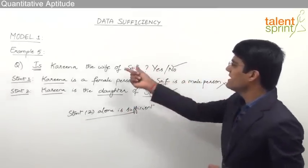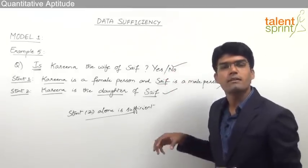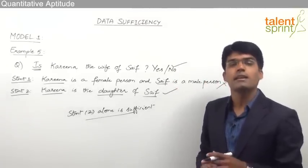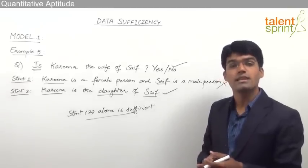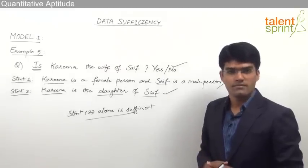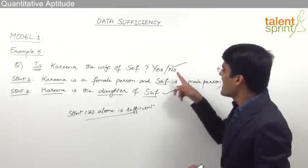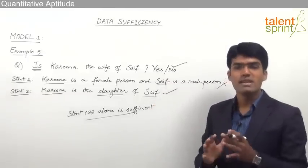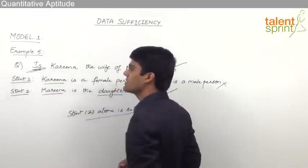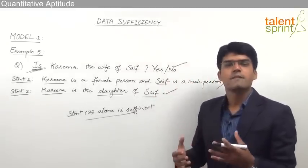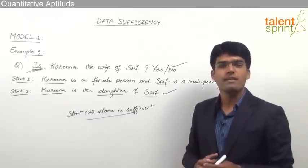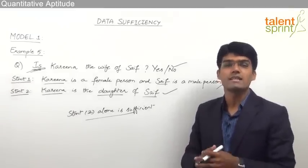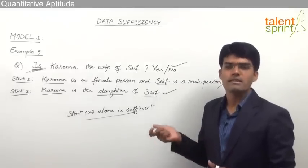So be careful: whenever for these type of questions we get the answer as 'no', it doesn't mean that the answer cannot be determined even if we combine both statements. We are able to say 'no' from statement 2, so the answer has to be only statement 2 is sufficient. Similarly, if we are able to say the answer is 'no' by combining both statements together, then we should say both statements together are sufficient. The important point is: if the answer is 'no' it doesn't mean the question cannot be answered — 'no' itself is the answer. This applies to questions starting with 'is', or where the answer is yes/no, true/false. Just because the answer is false doesn't mean the question cannot be answered; we have answered it, and depending on which statement gives us that answer, we mark accordingly.